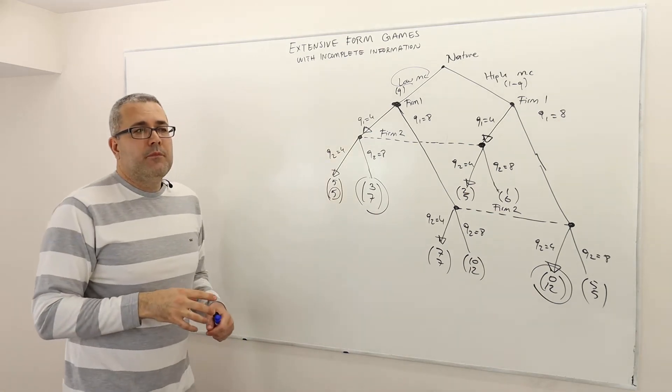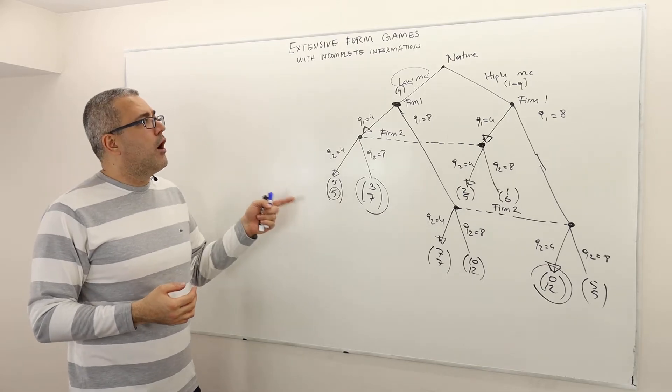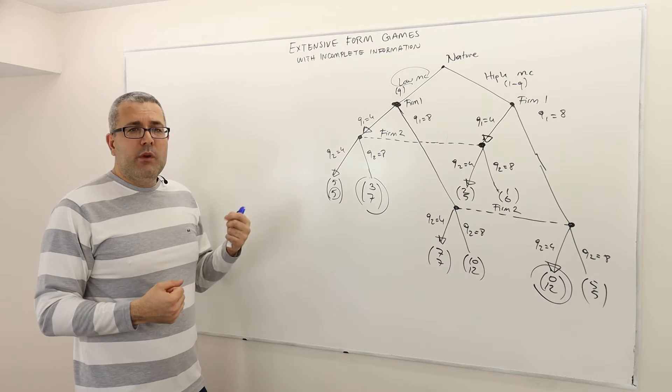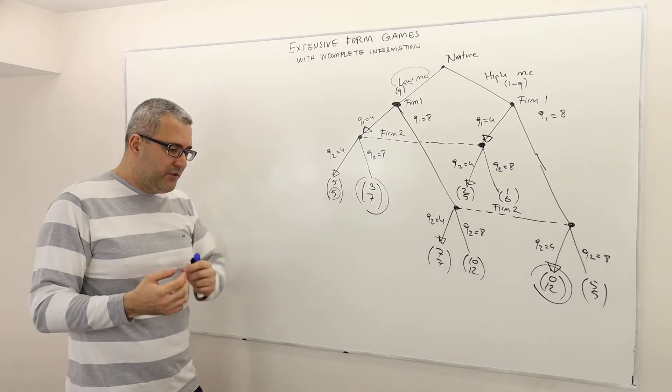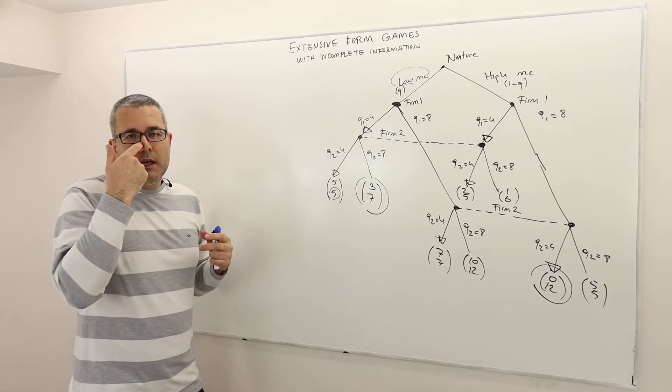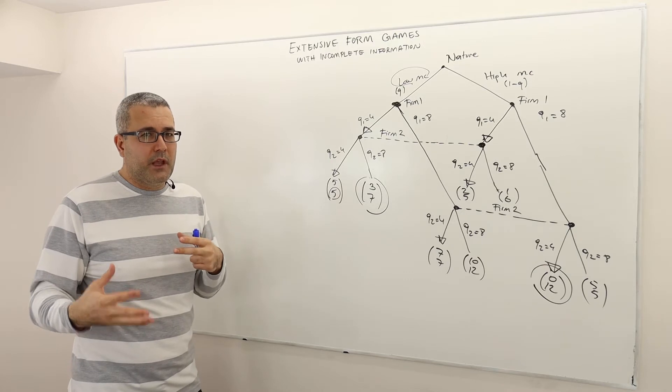So now we know how to find the Nash equilibrium or Bayesian Nash equilibrium of an extensive form game with incomplete information. However, remember Nash equilibrium is not a good predictor of extensive form games because it is good to analyze simultaneous move games, not extensive form games.